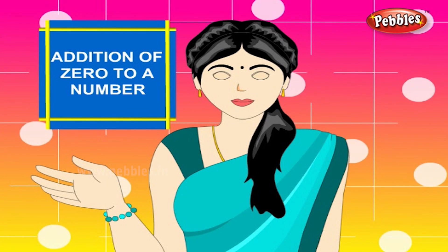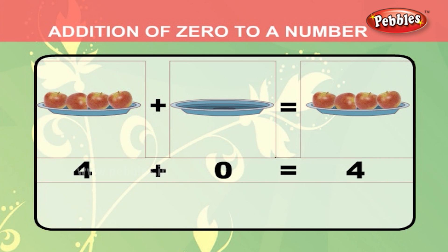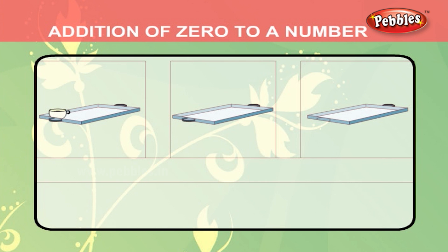Addition of 0 to a number. There are 1, 2, 3, 4 apples in the first plate and there are no apples in the second plate. We can say there are 0 apples in the second plate. 4 plus 0 is equal to 4 only. Any number added with 0 gives you the same number. In the same way, there are 1, 2, 3, 4, 5, 6 cups in tray 1 and no cups in tray 2. We say it as 6 plus 0 is equal to 6.